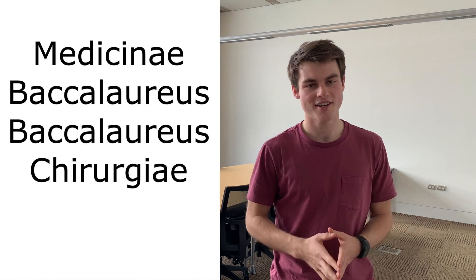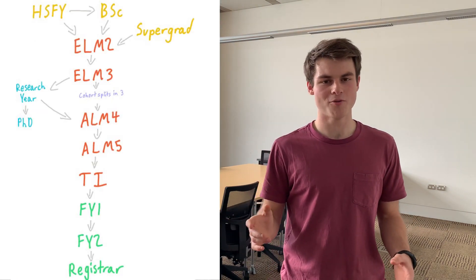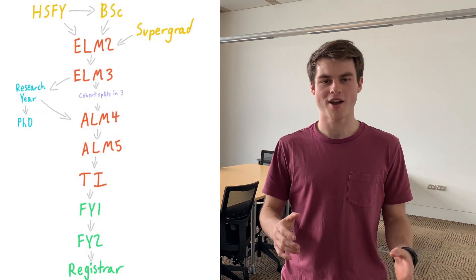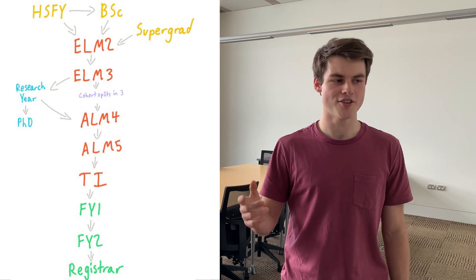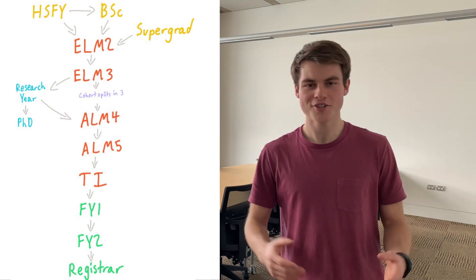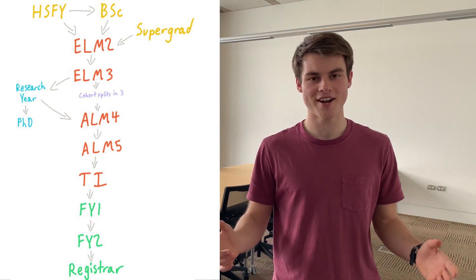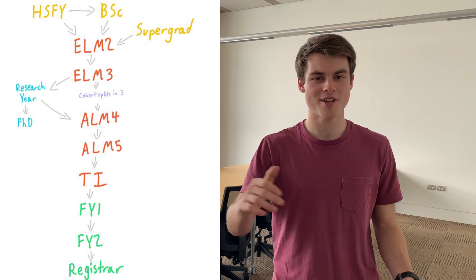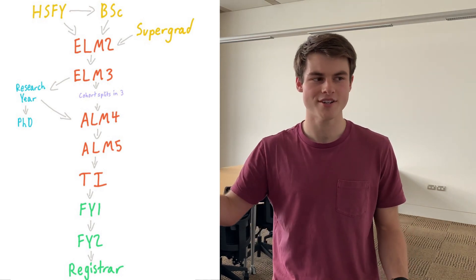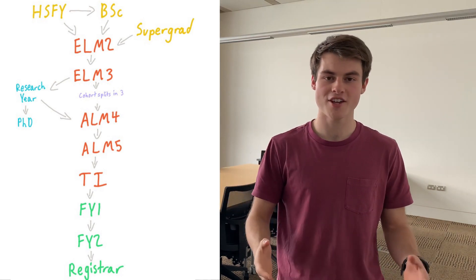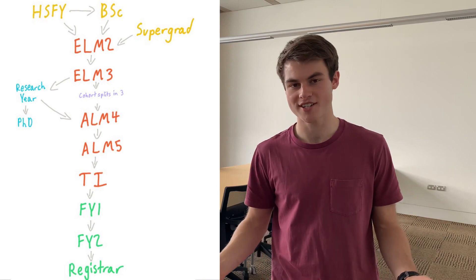ALM stands for — well, the other way it's a Latin for Bachelor of Surgery and Bachelor of Medicine. But really you haven't finished med school, because after this you have the TI year — the Training Intern year. During this year you get your $26,000 grant. After that you become a house officer, split into FY1 and FY2 years, and then after that you become a registrar, which is when you start specializing.